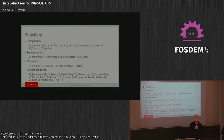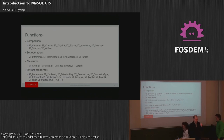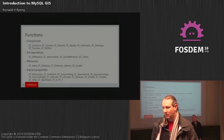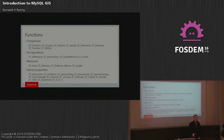Last question: why are SRIDs stored per row rather than per column? That design was made many years ago before my time. What we are looking at now is the ability to restrict a column to a specific SRID. We haven't done that yet, but mixing SRIDs screws up indexes and everything, so that is definitely something we're interested in.